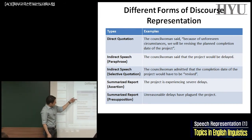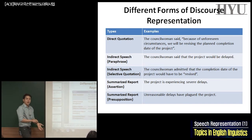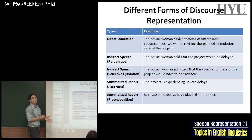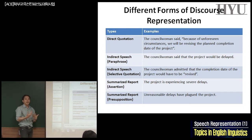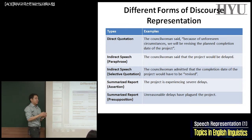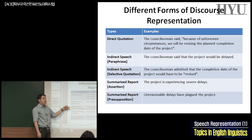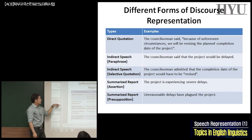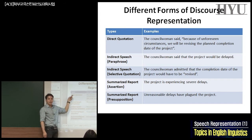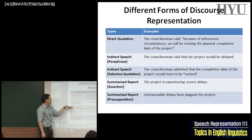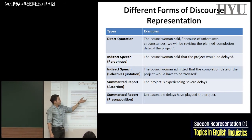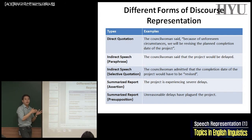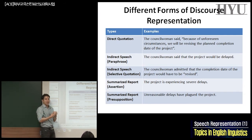There are maybe five patterns of speech representation — speech and thought representation. We'll talk about how one person can report another person's speech or another person's thought, whatever is said and whatever is thought in the head. So there are about five patterns that we'll look at, beginning from direct quotation up until summarized report. All five patterns have the same content, but the way in which they are represented is different.